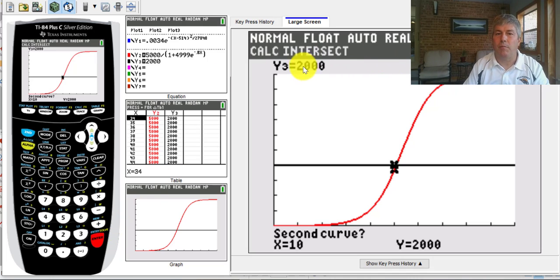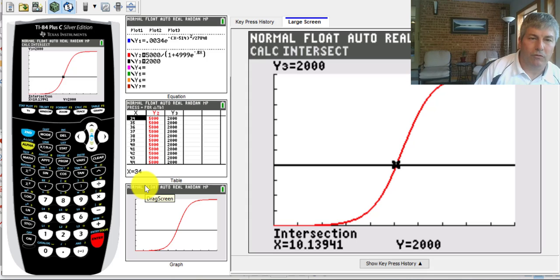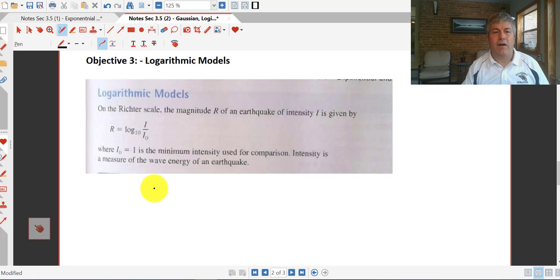The second curve is the black curve, y equals 2,000. Enter. I'm going to make a guess. Enter. And there it is, the intersection. Y equals 2,000 when x equals 10.14 days. So it'll take just a little bit more than 10 days for a college campus to be closed down when 40% of the students get that virus.